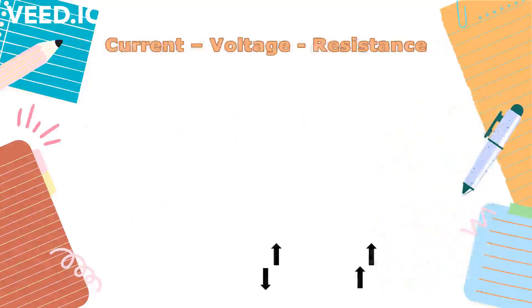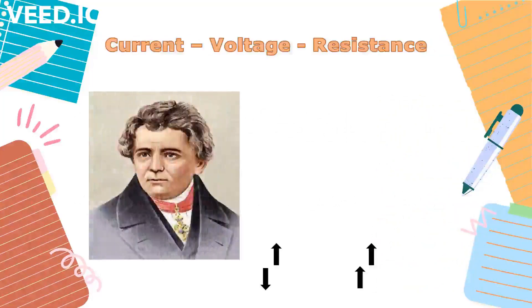The relationship between current, voltage, and resistance was first discovered by George Simon Ohm. In what we call Ohm's law, he found that at constant temperature,